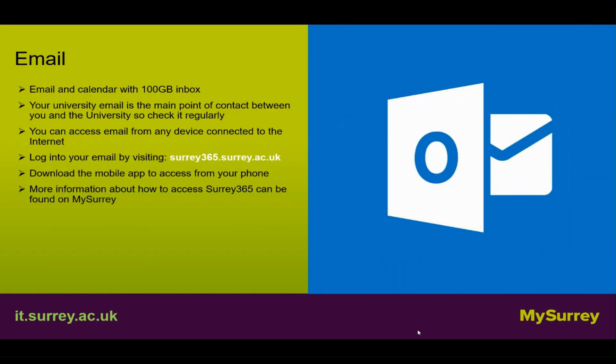Email and calendar: you have 100 gigabytes in your inbox. Your University email is the main point of contact between you and the University so please check it regularly. You can access email from any device connected to the internet. Log in to your email by visiting surrey365.surrey.ac.uk. Download the mobile app to access from your phone. For more information about how to access Surrey 365 go to mySurrey.